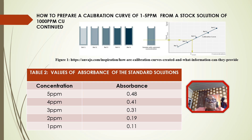If the concentration of your unknown sample is not within the calibration curve range, what you do is either redilute and recalibrate, or concentrate and recalibrate, until you get your sample within your curve. You don't assume that by extending the curve you will get your sample. It is very important that the absorbance of your unknown sample falls within your calibrated range.